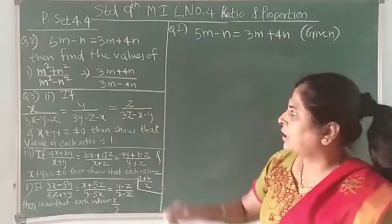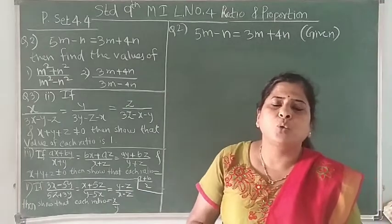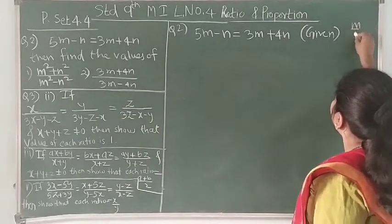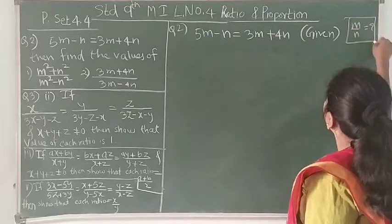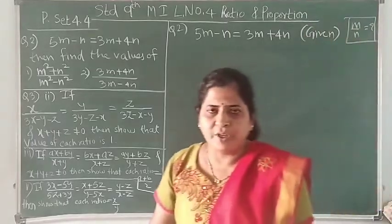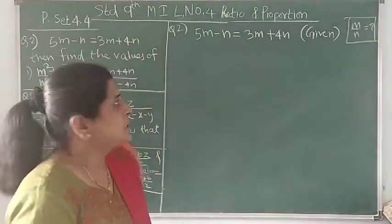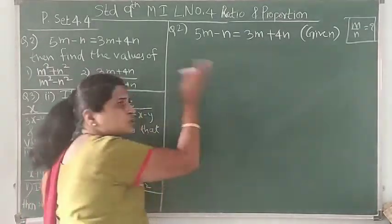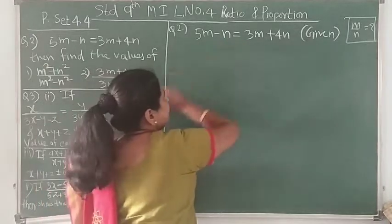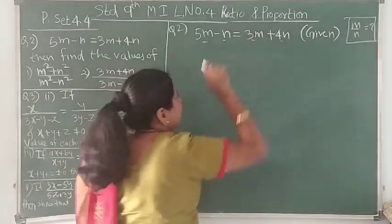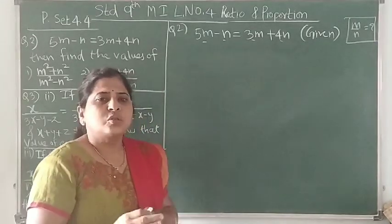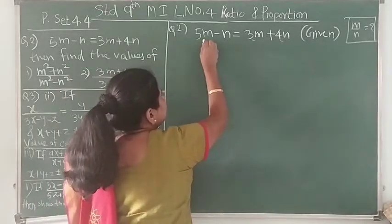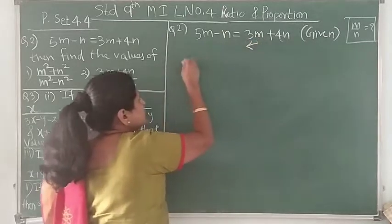Now we know that for getting such values, we need the value of the basic ratio m upon n. As here the variables are m and n, we require the value of m upon n. So the new thing here is just to get this ratio m to n. It's very easy from the given statement. What we have to do is collect the like terms on the same side. These m and n terms appear on both sides of the equation, so let's collect m on one side and n on the other.